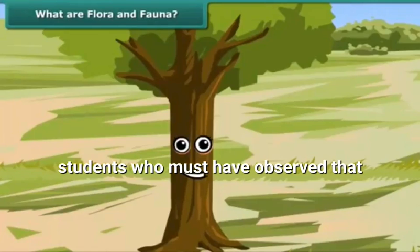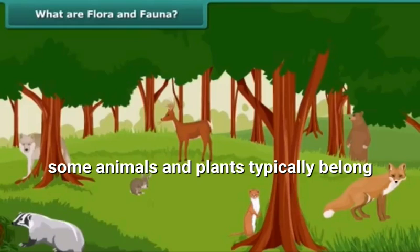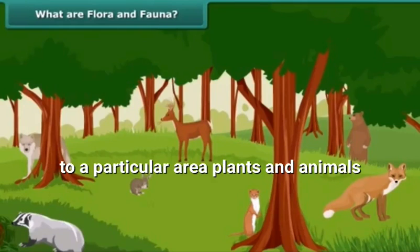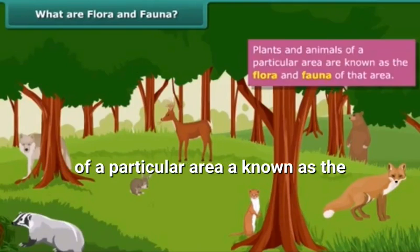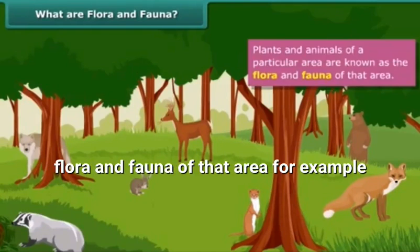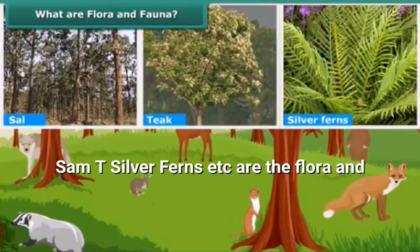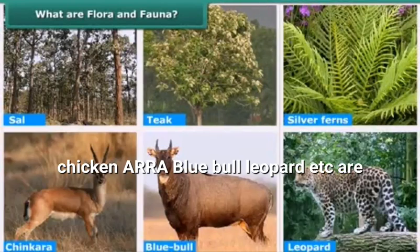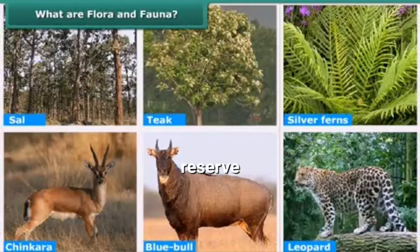Students, you must have observed that some animals and plants typically belong to a particular area. Plants and animals of a particular area are known as flora and fauna of that area. For example, Sam tree, tea silver, fern, etc. are the flora, and chicken ara, blue bull, and leopard, etc. are the animals of a particular reserve.